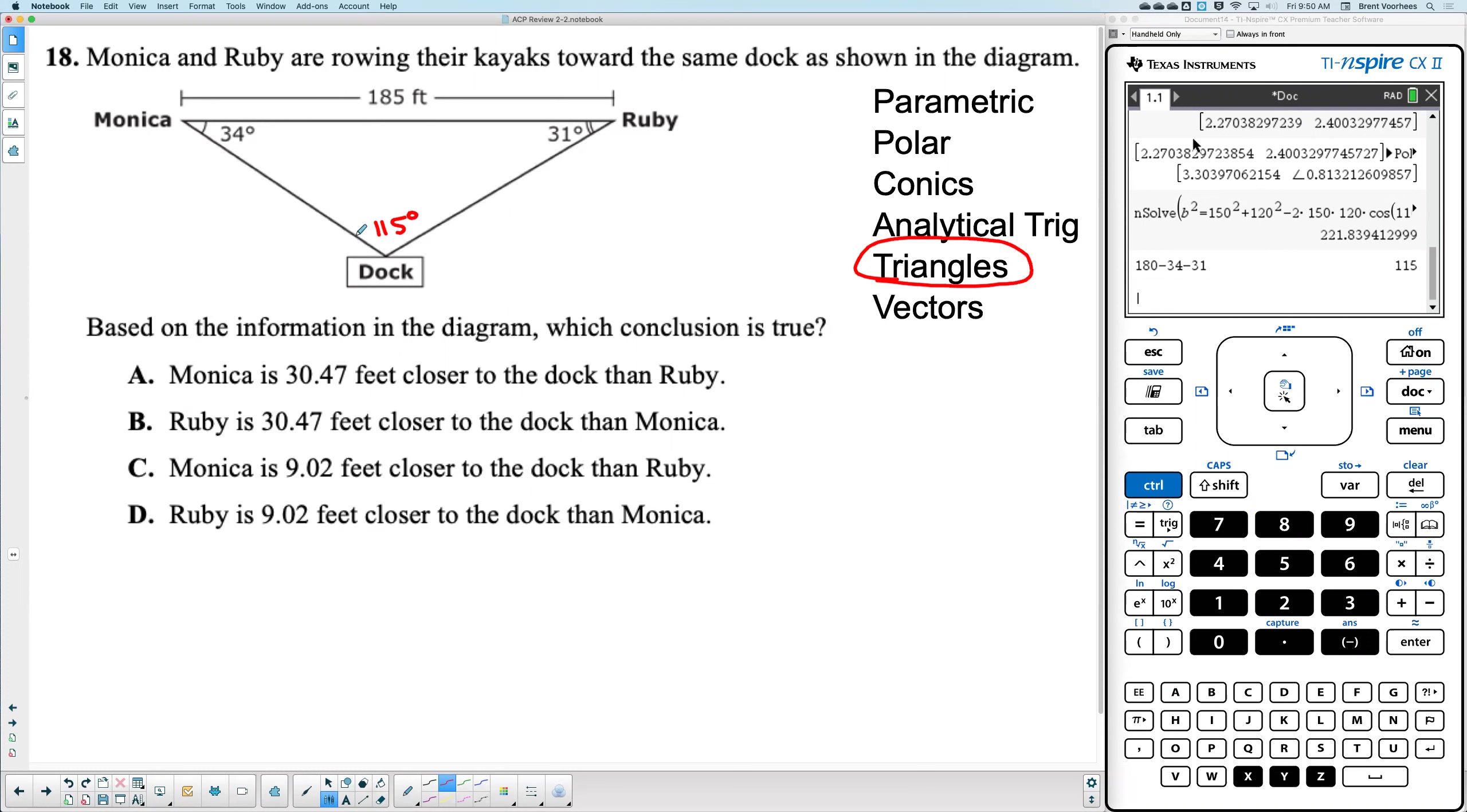By the way, before I forget, this is number 18. Students got this right 50% of the time. That means half of you got it right, half got it wrong.